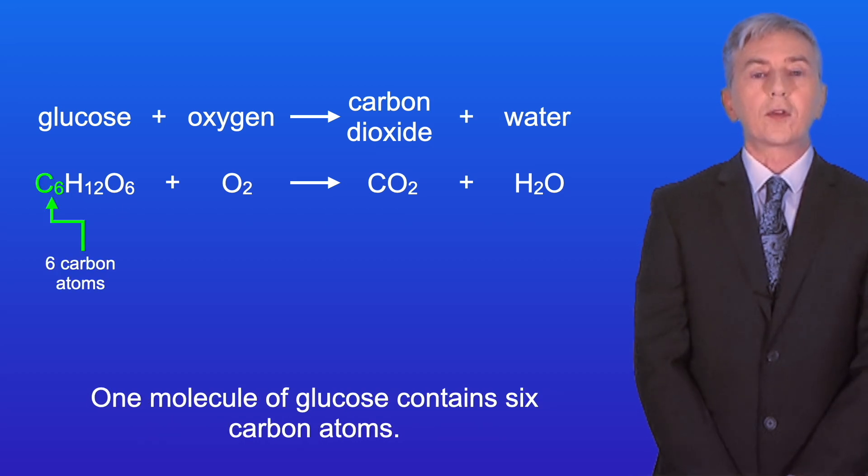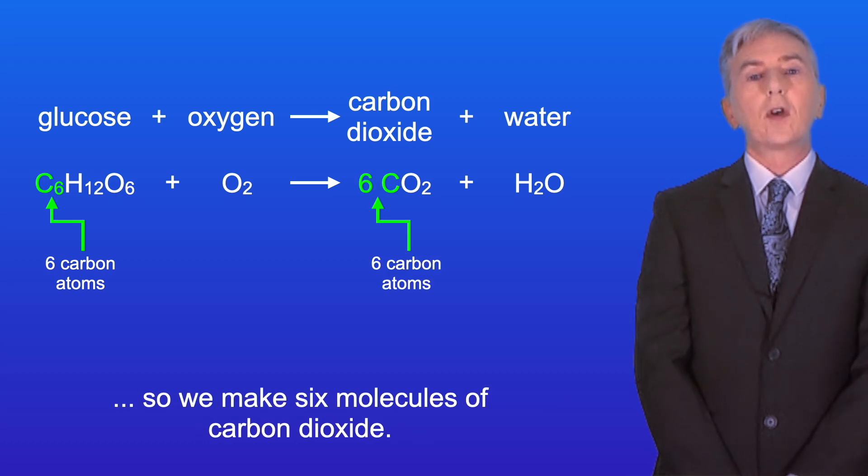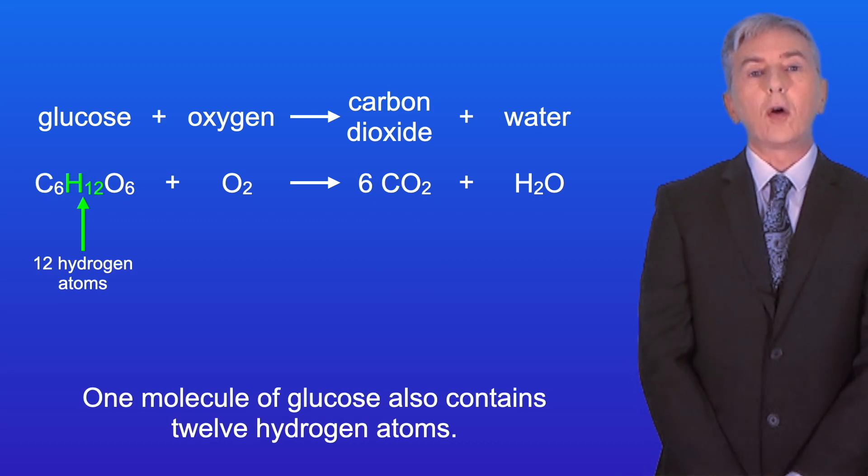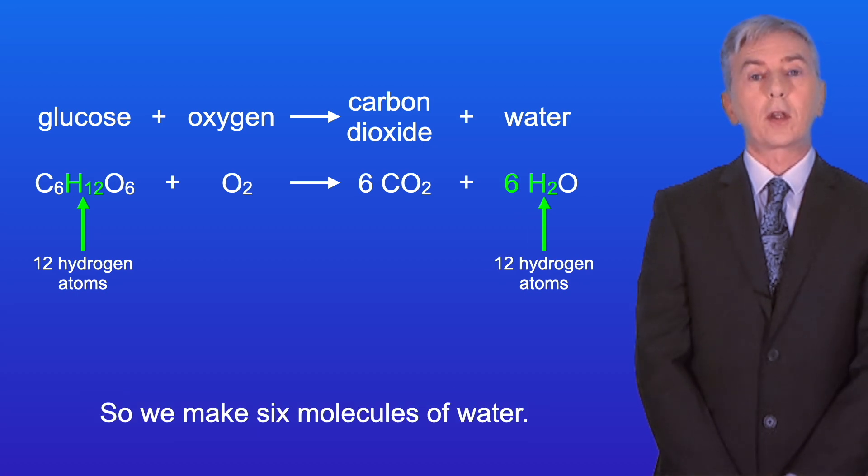One molecule of glucose contains six carbon atoms. Each carbon atom makes one molecule of carbon dioxide, so we make six molecules of carbon dioxide. One molecule of glucose also contains 12 hydrogen atoms. We need two hydrogen atoms to make each molecule of water, so we make six molecules of water.